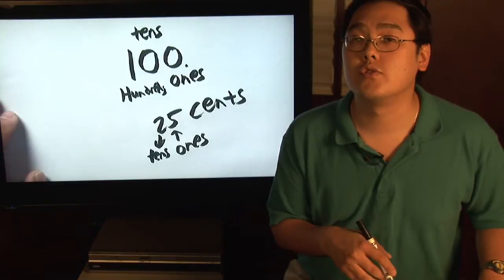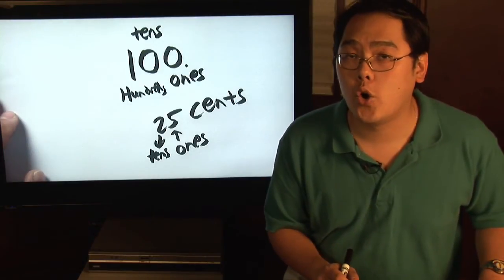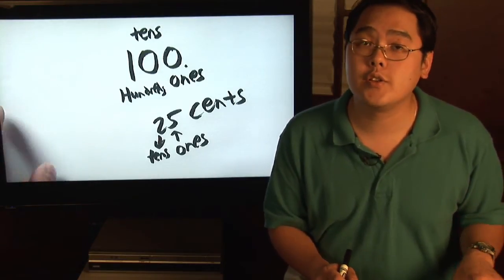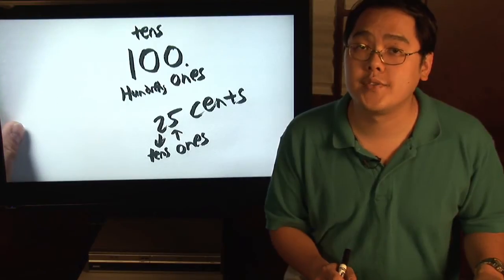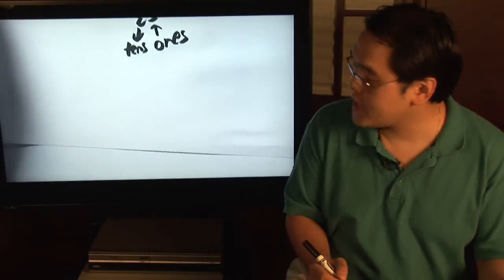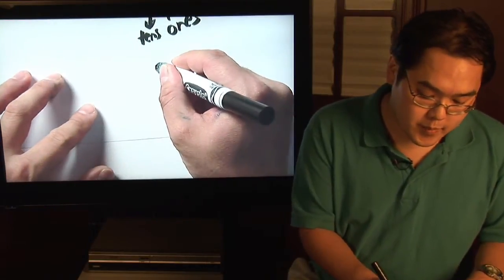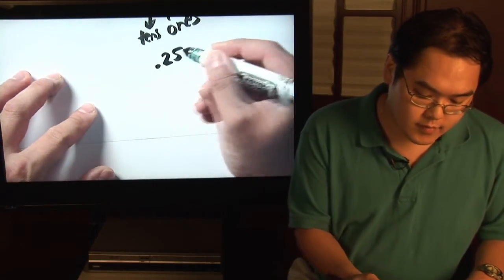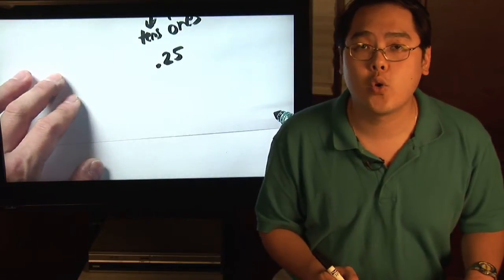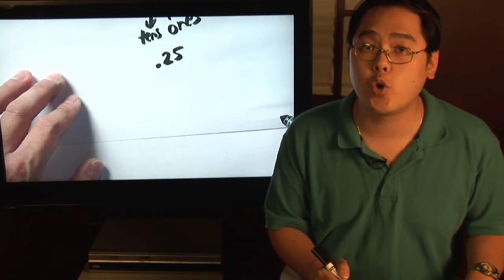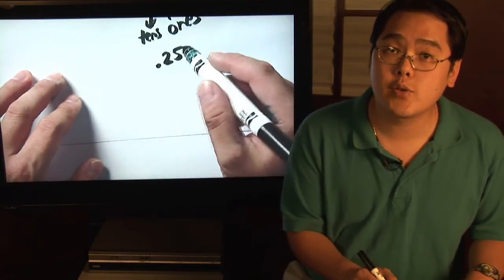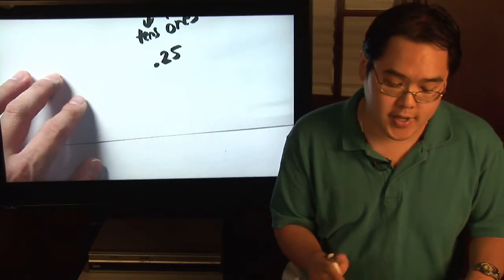You can use coins to teach place value on a whole number perspective, or you can use the fact that a quarter is twenty-five cents in this perspective. Because a quarter is twenty-five cents, you can teach students that a quarter is twenty-five percent of a dollar, or .25. This will help you teach them the idea of smaller place values.